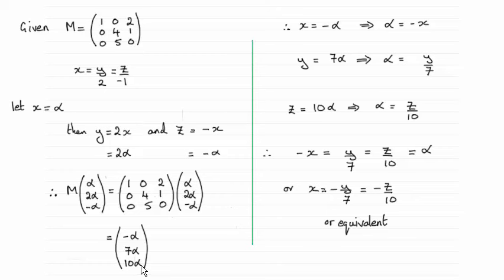So what I want to do is find out a relationship between these three variables, x, y, and z. So I've written x as minus alpha, and I've got alpha equals minus x. y would equal 7 alpha, so alpha equals y over 7, and z equals 10 alpha, so alpha equals z over 10. And so I can say that all of these are equal to alpha.